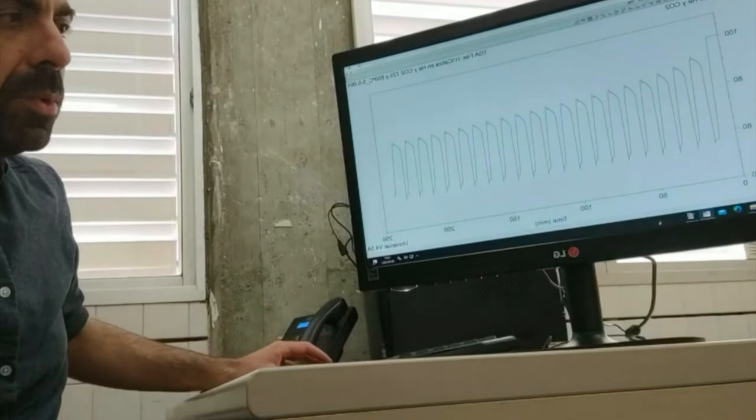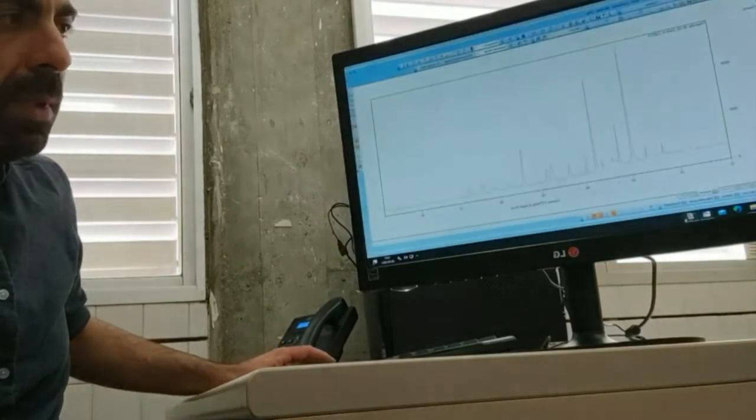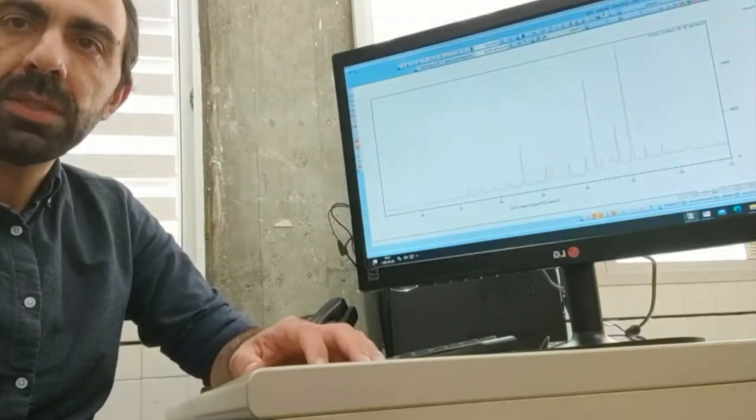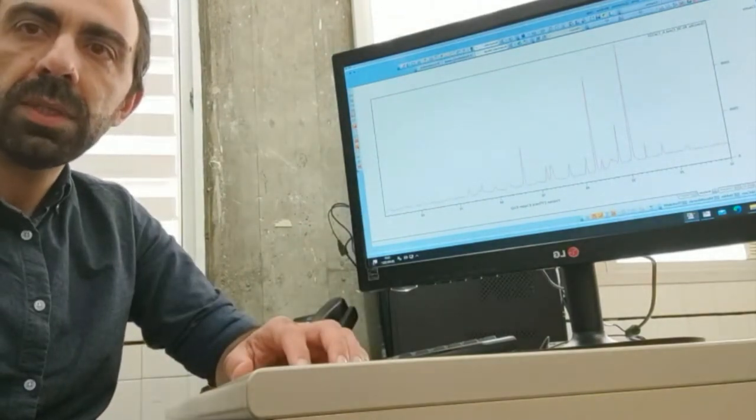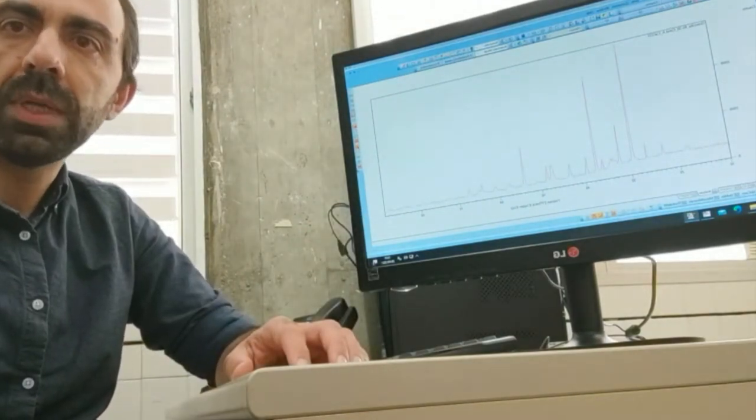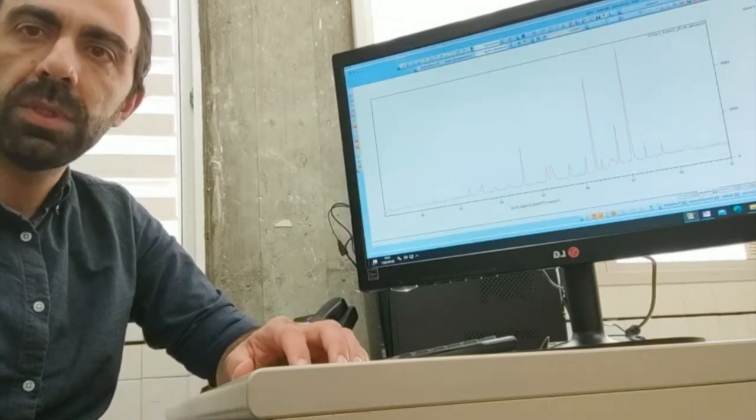Moreover, we also analyze the samples before and after the cycles by X-ray diffraction. For example, in this diffraction pattern, we can study the amount of calcium oxide that is active or inactive for carbonation after 20 cycles.